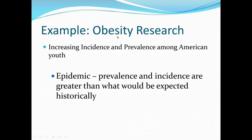As an example, we're going to look at obesity research, specifically increasing incidence and prevalence among American youth. Epidemic means the prevalence and incidence are greater than what is expected — the normal rate. For instance, if normally only 1% of a community is obese but now 20–50% is obese and increasing, we call that an epidemic. Epidemic means prevalence and incidence are greater than the normal or historically expected rate.